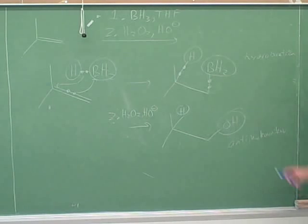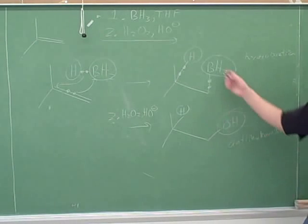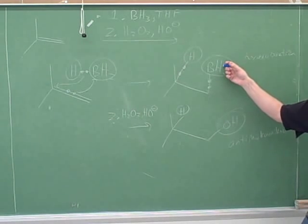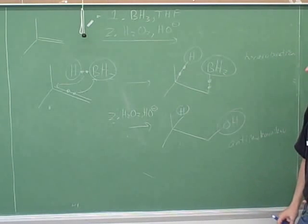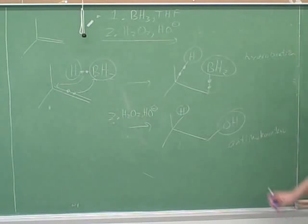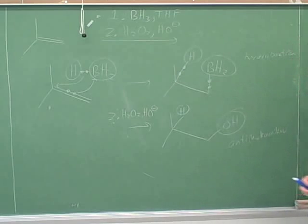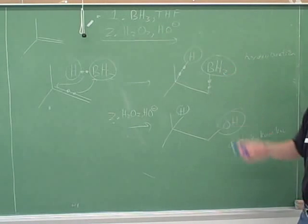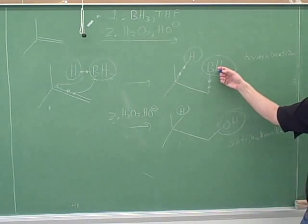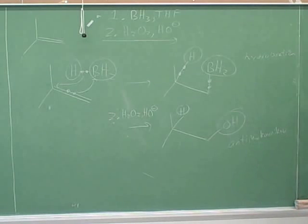Why did it end up on the less substituted carbon? Because it ended up replacing the boron. And why was the boron on the less substituted carbon? Steric hindrance. So we're not going to go through the whole mechanism here, but you should be able to explain what we just went through. The boron ends up on the less substituted carbon because of steric hindrance, and then the OH is simply replacing the boron. So that's also on the less substituted carbon.